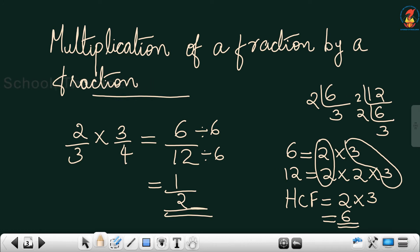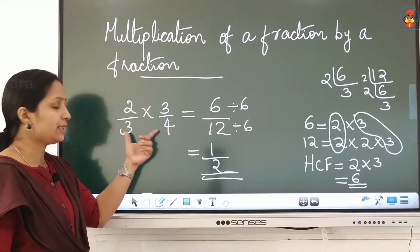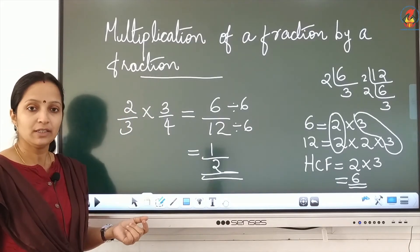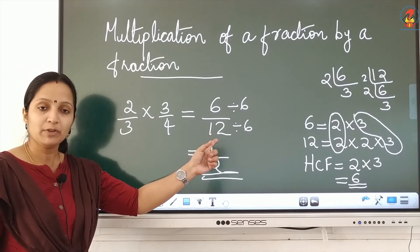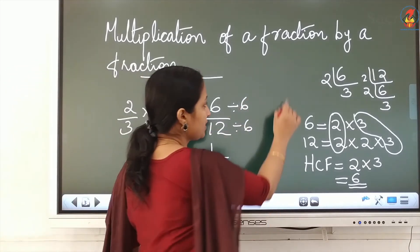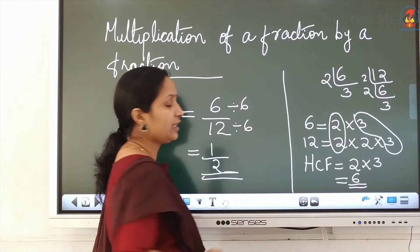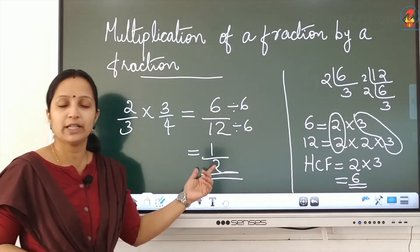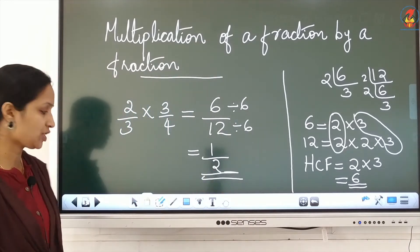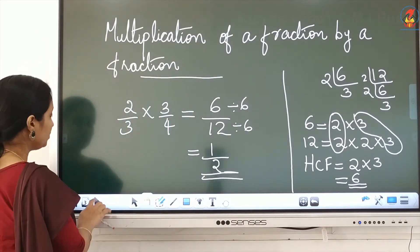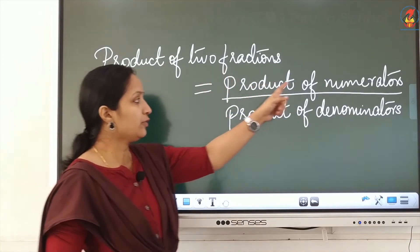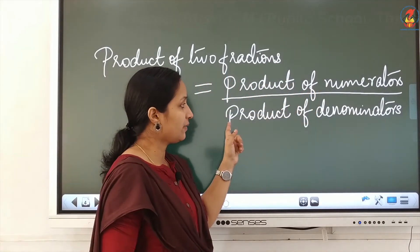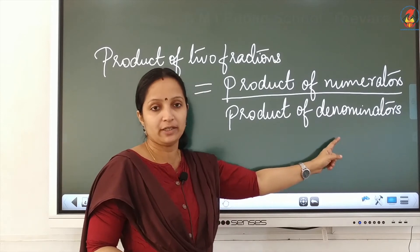If you want to multiply a fraction by a fraction, the rule is: multiply the numerators, multiply the denominators. If the answer is a proper fraction, find the HCF and divide by it to get the lowest term. The product of two fractions equals the product of numerators divided by the product of denominators.